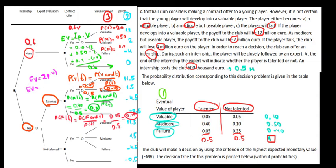That's going to be 0.10 times the value of 11.5, plus the probability of 0.8 times the value of 1.5, plus the probability of 0.10 times the loss of minus 4.5. And that gives us an expected value of 1.9.